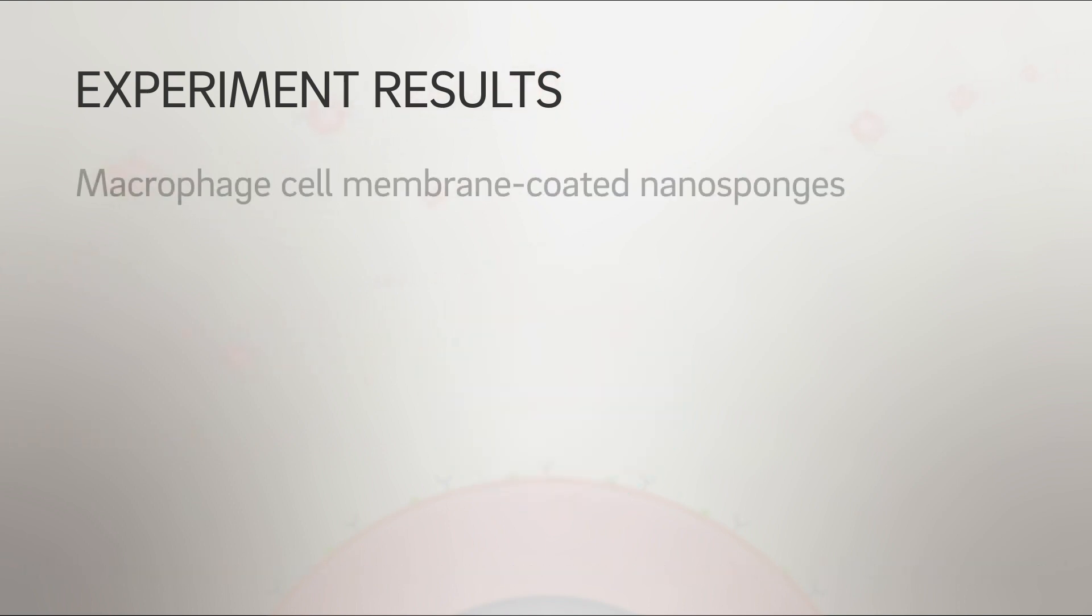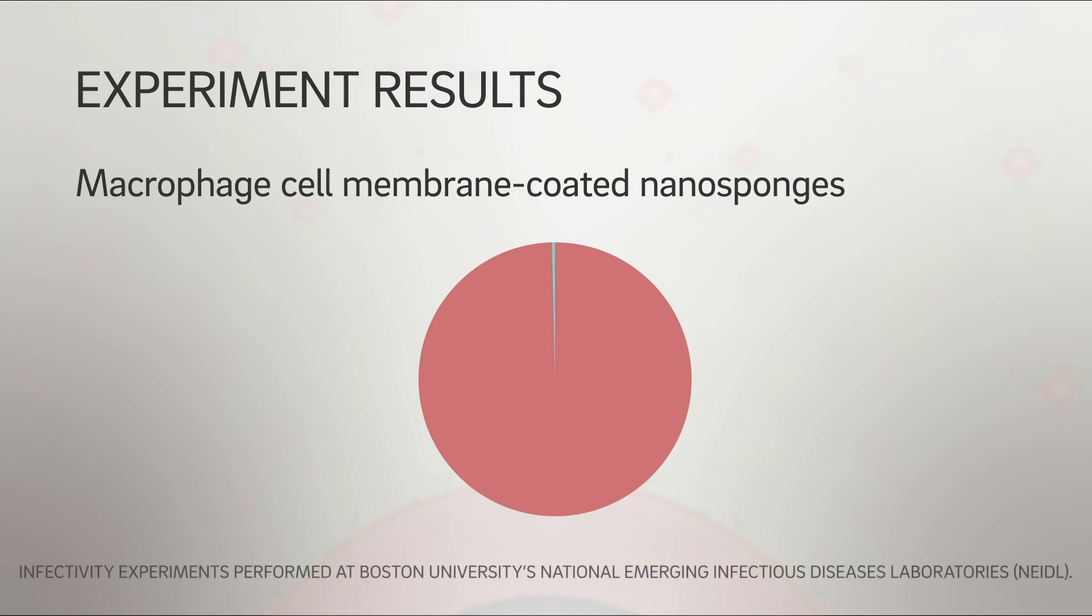Nanosponges cloaked with membrane fragments of macrophage cells reduced the ability of this virus to infect host cells in a dish by 88 percent.